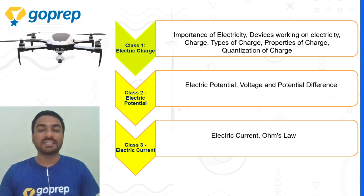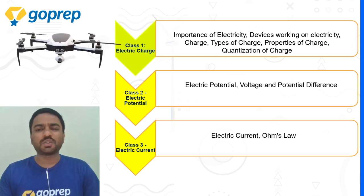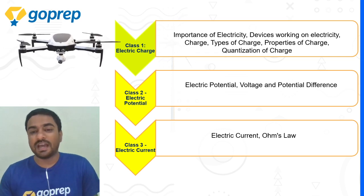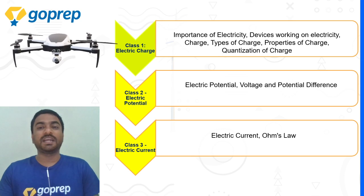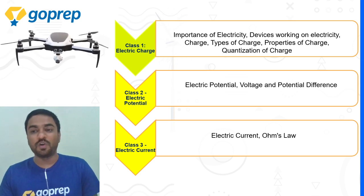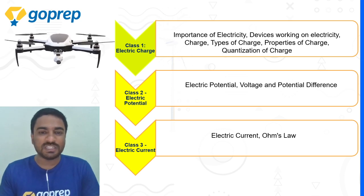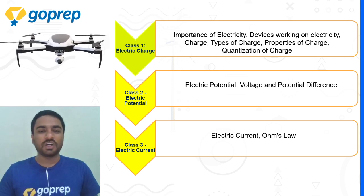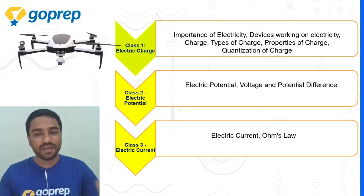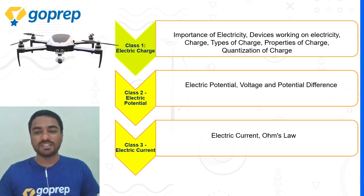Then comes Class 2, where we will discuss electric potential, voltage, and potential difference. Many students have a lot of confusion about what these terms mean and what the differences between them are — electric potential, voltage, potential difference — and what the relationship between them is. We are going to discuss all of those things in Class 2.